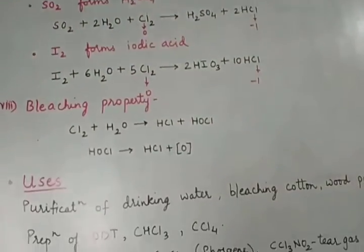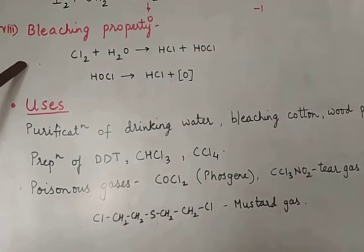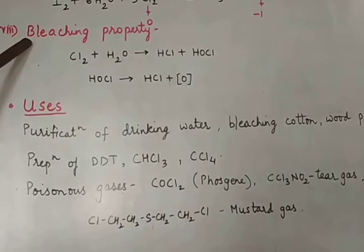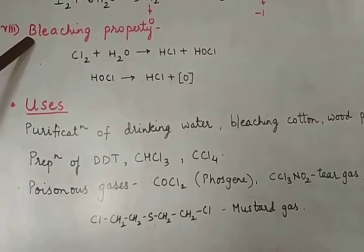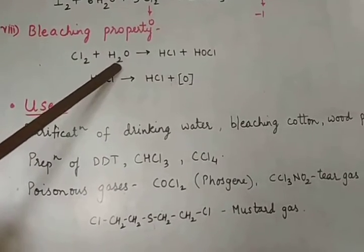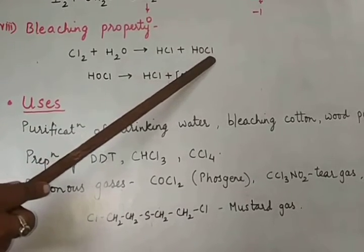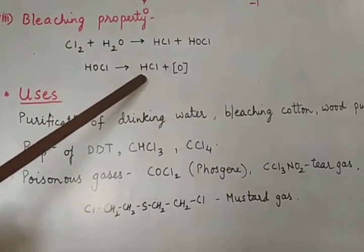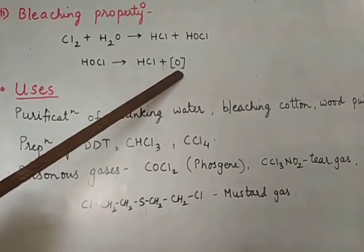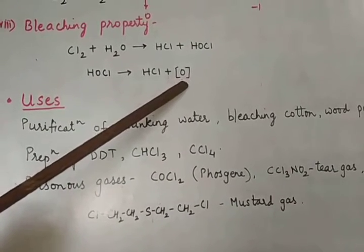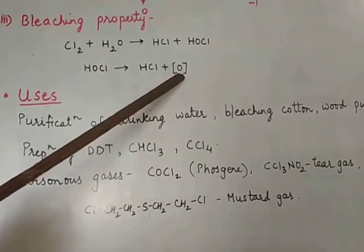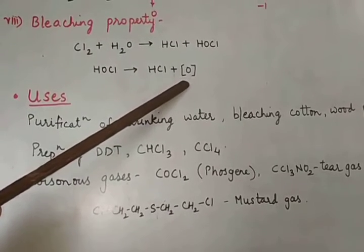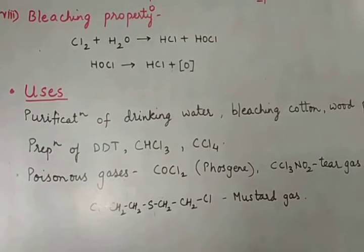The last reaction of chlorine is the bleaching property. Bleaching is when the original color becomes faint. Chlorine when treated with water forms HCl and HOCl. This HOCl further decomposes to HCl and nascent oxygen [O] — meaning oxygen is present in atomic form, not molecular form. This nascent oxygen is responsible for the bleaching action of chlorine.